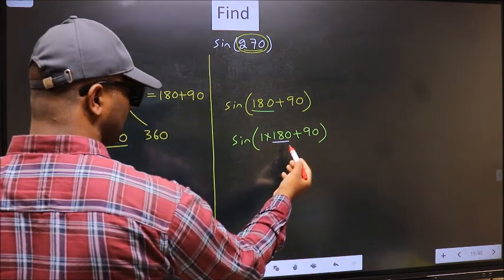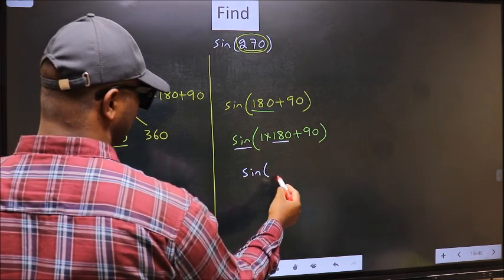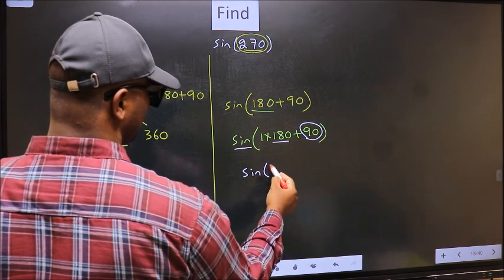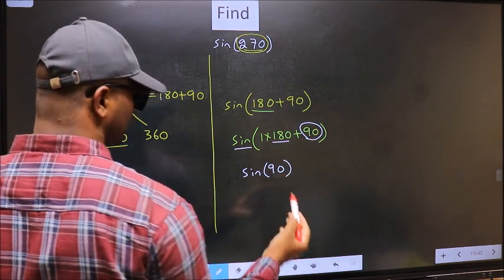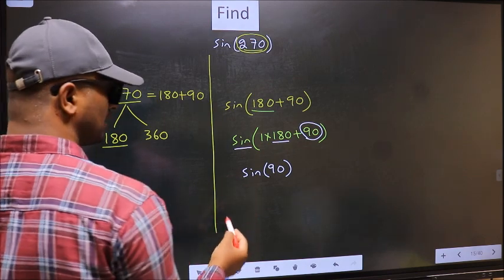Here we have 180. So sine is not going to change. It will remain sine. And inside we get this angle 90. Now the question is, will we get here plus or minus?